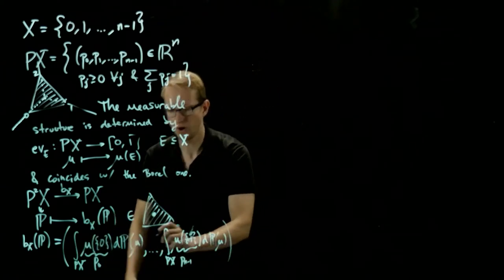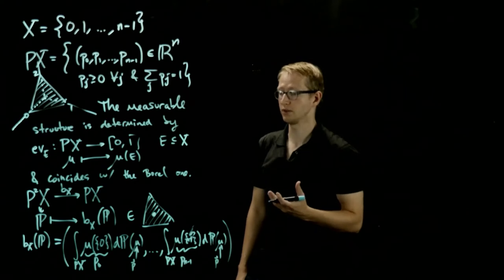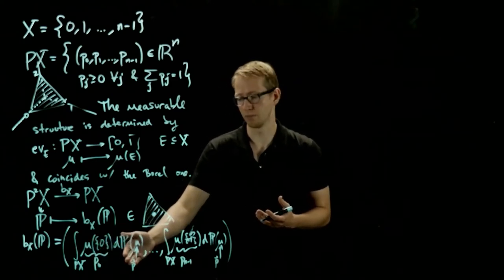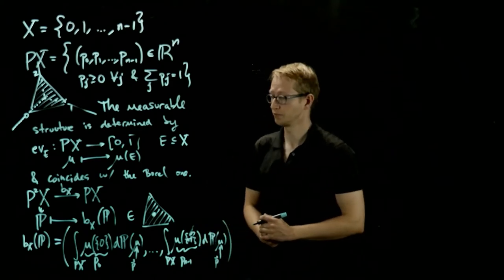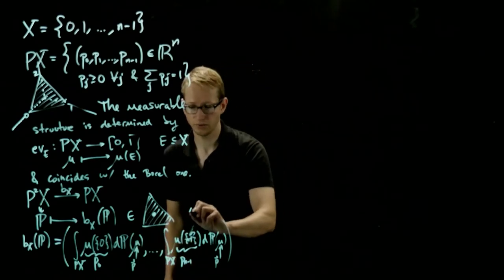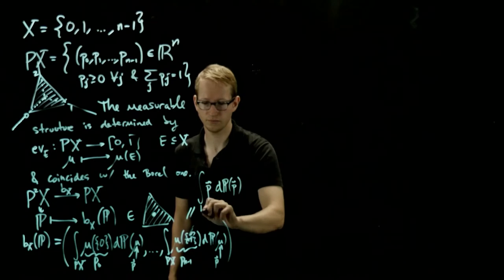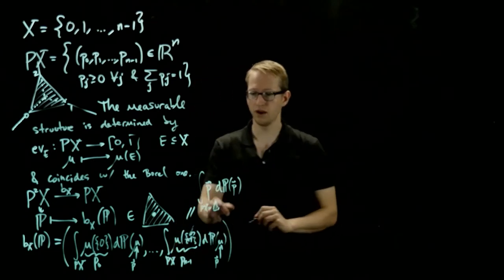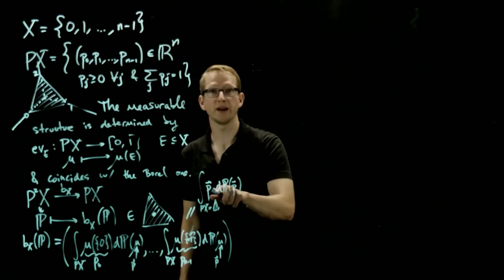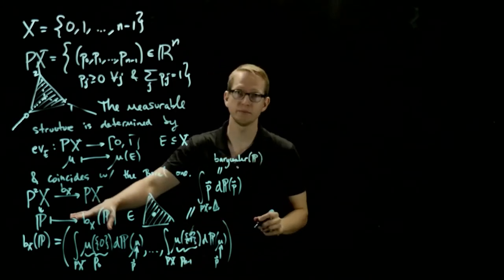If we think of mu as now being actually a vector — we'll call it P — it's a vector in Rn. So this is an integral of the first component with respect to some measure, and the integral of the last component with respect to that same measure. When we put this all together, this is actually a vector of integrals — which is exactly the integral of the vector P itself with respect to this measure. And Px is the simplex. The natural transformation from the Giry Monad gives us the barycenter of our measure, the probability measure on probability measures.